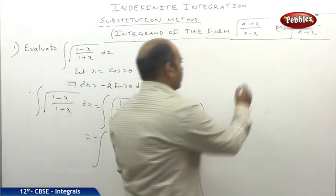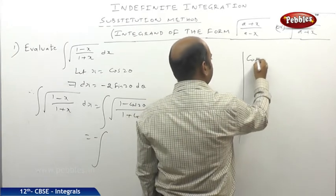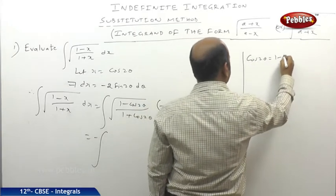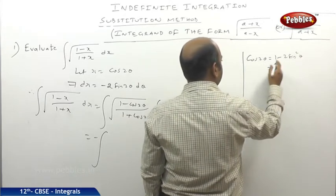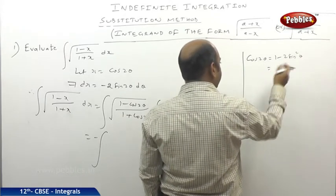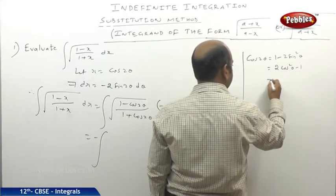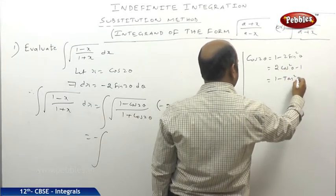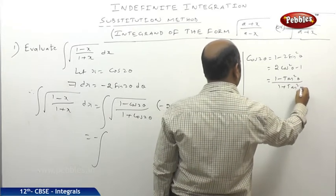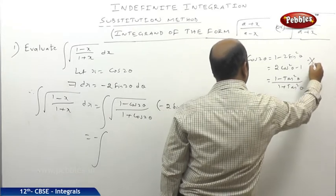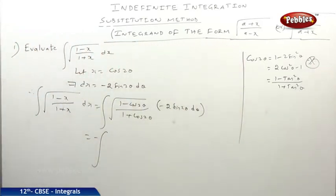Using the formulas from 11th class: cos 2θ equals 1 minus 2sin²θ and equals 2cos²θ minus 1. So 1 minus cos 2θ equals 2sin²θ and 1 plus cos 2θ equals 2cos²θ. These formulas are very important and should be remembered throughout 12th class.